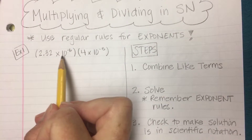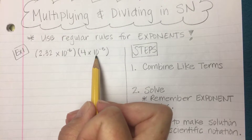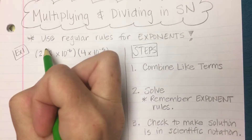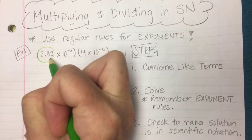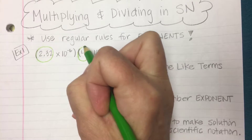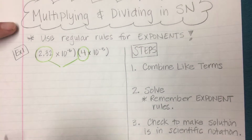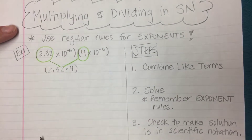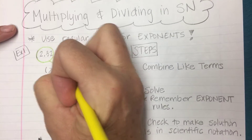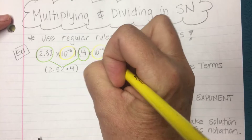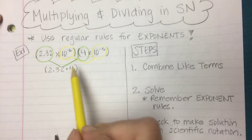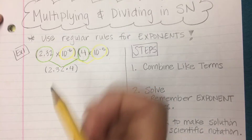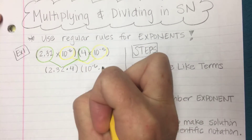We have 2.32 times 10 to the negative 6, multiplied by 4 times 10 to the negative 5th. The first thing I want to do is combine my like terms. I take my regular numbers — 2.32 and 4 — and pull them together to get 2.32 times 4. My other set of like terms are my numbers with exponents: 10 to the negative 6 and 10 to the negative 5. I'm going to bring those together as well, since this is all multiplication and the commutative property allows me to move those numbers around.